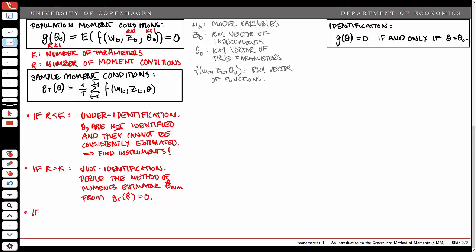In the last case, we have r greater than k, so we say we have over-identification. That means we have more valid moment conditions than we need to estimate the k parameters. Note that this is a good thing and it allows us to derive the GMM estimator, which we will outline next.